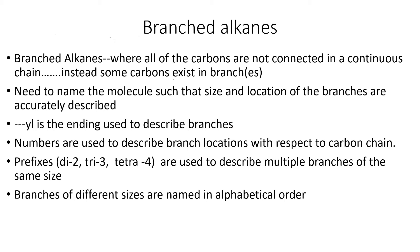Every example so far has been a straight chain alkane, where all carbons are connected in a continuous pattern. There's another type called branched alkanes, where all the carbons are not connected in one continuous chain — instead, some exist in one or more branches.